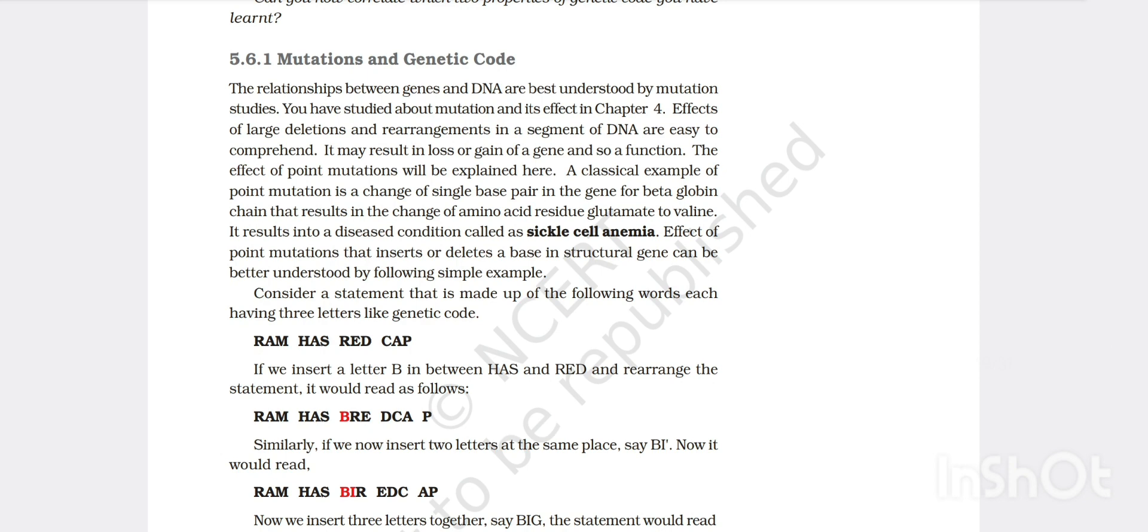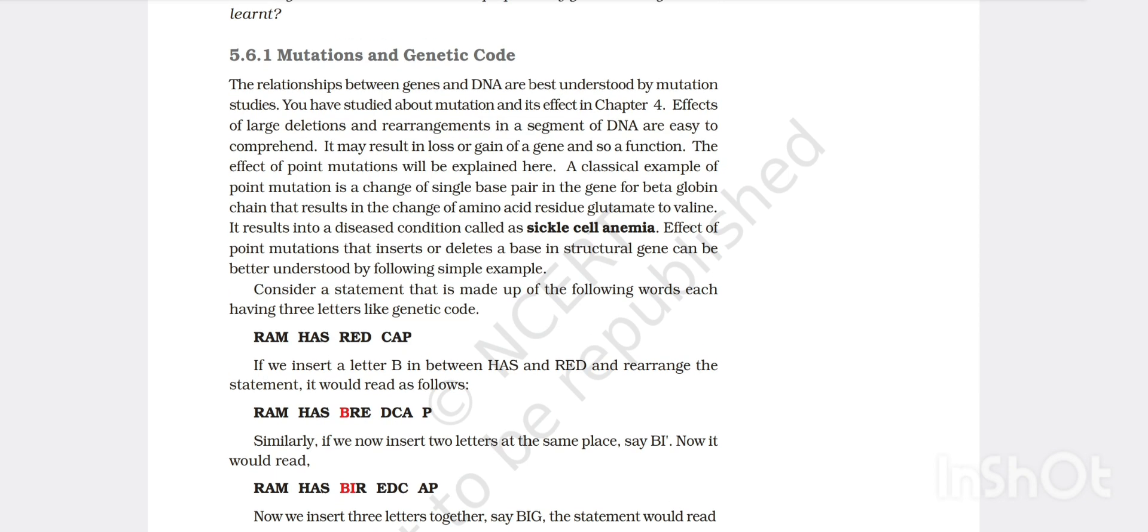Then mutations and genetic code. The relationship between genes and DNA are best understood by mutation studies. You have studied about mutation and its effect in chapter 4. Effect of large deletions and rearrangements in segment of DNA are easy to comprehend. It may result in loss and gain of genes and their function. The effect of point mutation will be explained here. A classical example of point mutation is change in single base pair in the gene for beta globin chain that results in the change of amino acid residue glutamate to valine. This results into a disease condition known as sickle cell anemia.